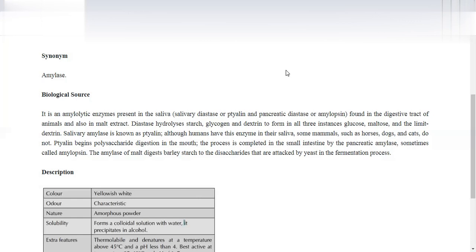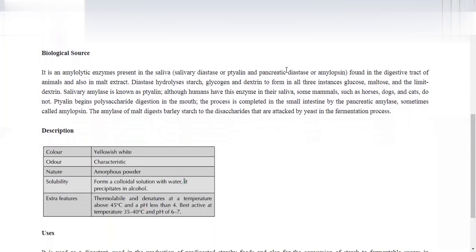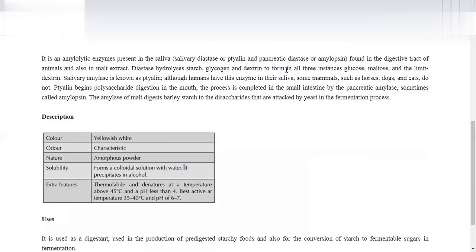Salivary amylase is also known as Ptyalin. Humans have this enzyme in their saliva, and mammals like horses, dogs, and cats also have it.